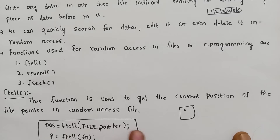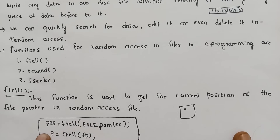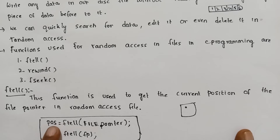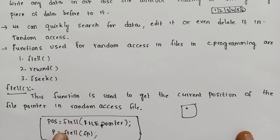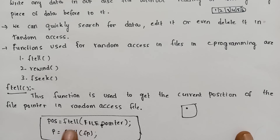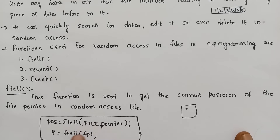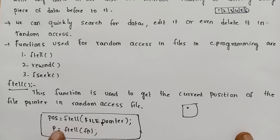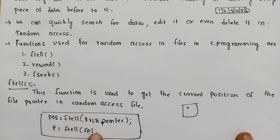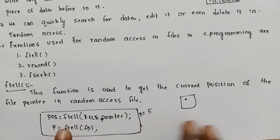The syntax is: pos = ftell(file_pointer). In the pos variable, the current position of the file pointer is stored. The variable is typically an integer variable. For example: p = ftell(fp). The file pointer's current position value is saved into the variable p.